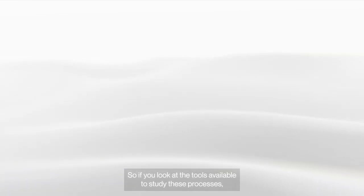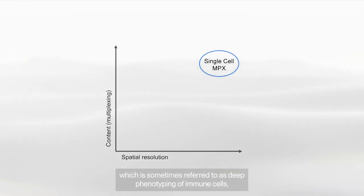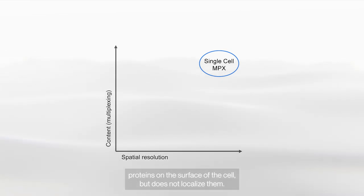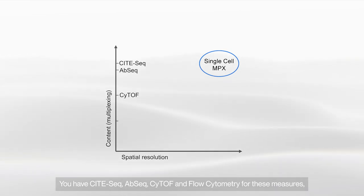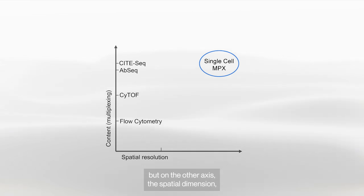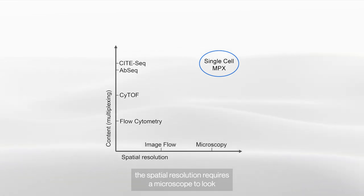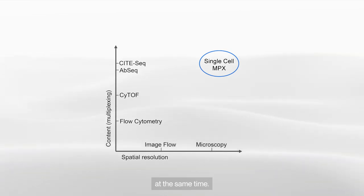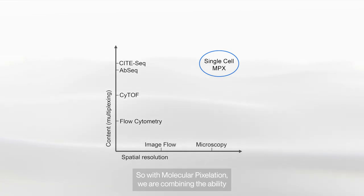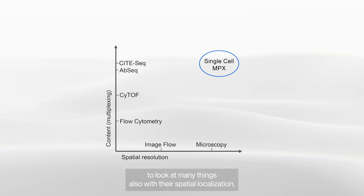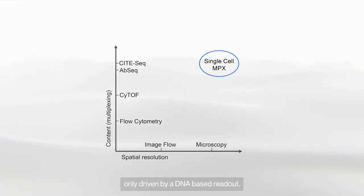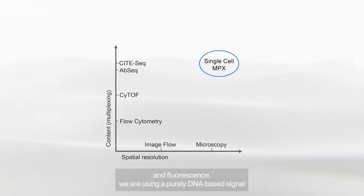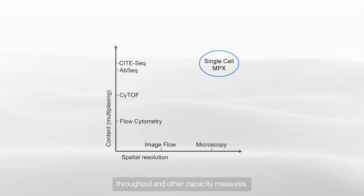If you look at the tools available to study these processes — sometimes referred to as deep phenotyping of immune cells — high content analyses can measure multiple proteins on the surface of the cell, but do not localize them. You have CiteSeq, AbSeq, CyTOF, and flow cytometry for these measures. But on the other axis, the spatial dimension, spatial resolution requires a microscope to see where the proteins are in relation to each other, and with a microscope you can only detect a handful of proteins at the same time. With molecular pixelation, we are combining the ability to look at many things also with their spatial localization, driven only by a DNA-based readout.